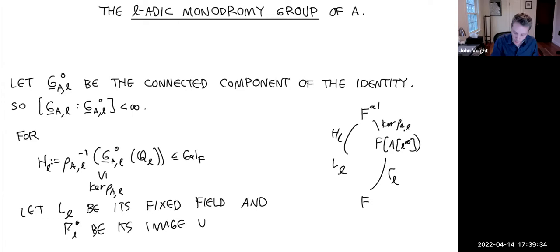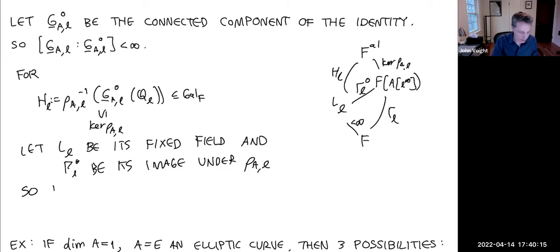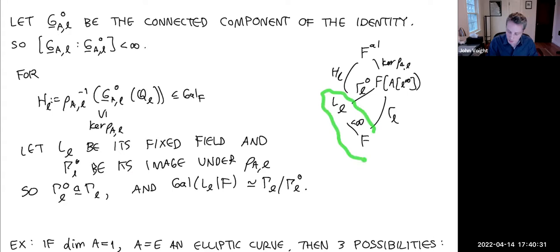This L_ℓ is a finite extension of F — it's the unique sub-extension where the image of the Galois representation is connected in the Zariski topology. In particular, Gal(L_ℓ/F) is isomorphic to the component group G_{A,ℓ}/G^0_{A,ℓ} in the Zariski topology. This is the field extension we want to understand; it's defined in terms of the ℓ-adic monodromy group and its connected component.